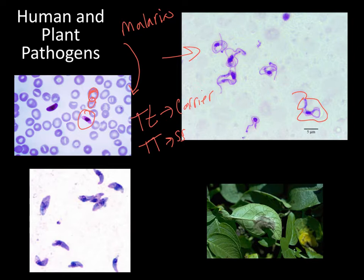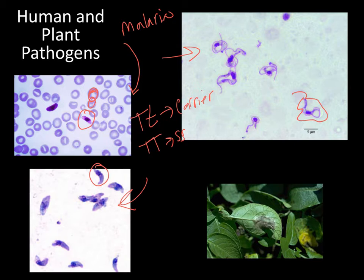The third one is toxoplasmosis. You can actually find this in the fecal matter from cats. Specifically, if you are pregnant, you are told not to clean out litter boxes and not to garden or have your hands in the dirt, due to this specific parasite. It does cause birth defects. Again, another blood-related protist.